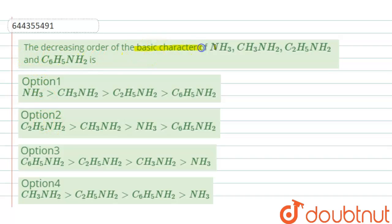of basic character of ammonia, CH3NH2 which is methylamine, C2H5NH2 which is ethylamine, and C6H5NH2